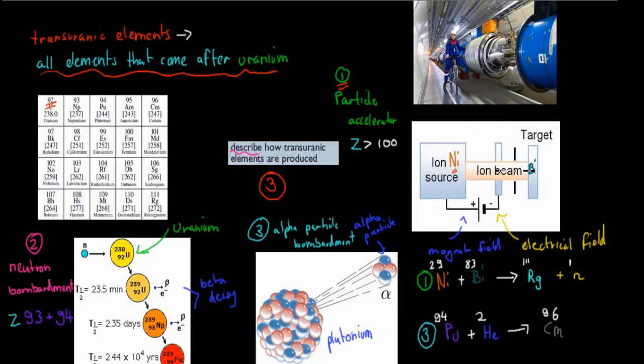And this will actually be crashed into our target through the speed of light. So really, almost the speed of light, really quickly. And a magnetic field and an electrical field help produce that speed of light. So in this case, we have our source, which is our nickel. And that crashes into our bismuth, which is Bi, our bismuth here. And that's our target.